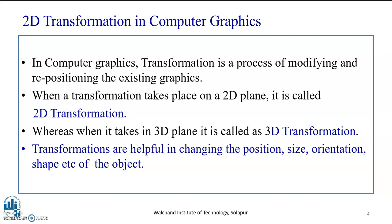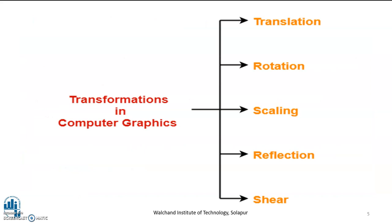Transformations are helpful in changing the position, size, orientation, and shape of the object. So, transformation basically modifies the graphic primitive. The graphic primitive can be anything, right from a line, a circle, triangle, any polygon. So, transformations in computer graphics are broadly categorized as translation, rotation, scaling, reflection, and shearing, also called as shear. In this video lecture, we will focus our discussion to 2D translation.